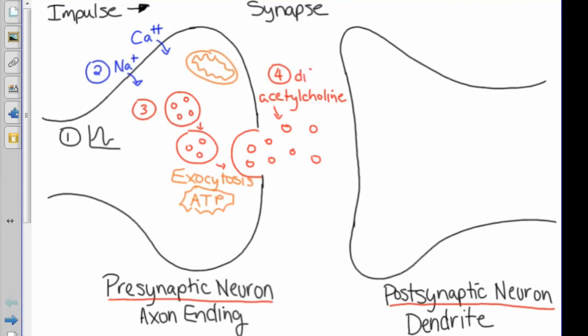The acetylcholine diffuses across the synapse and joins with receptors on the postsynaptic neuron. When it does so, it allows those receptors to open and sodium will rush in to the postsynaptic neuron.